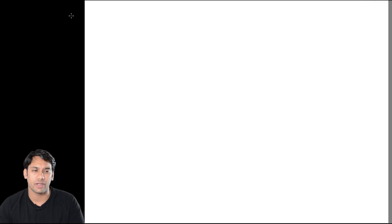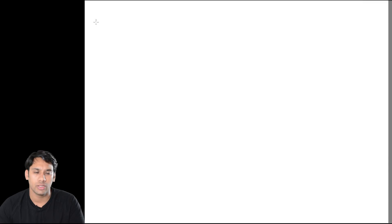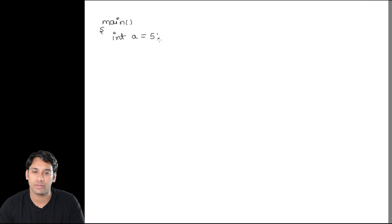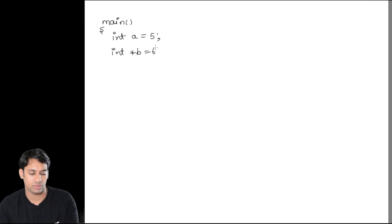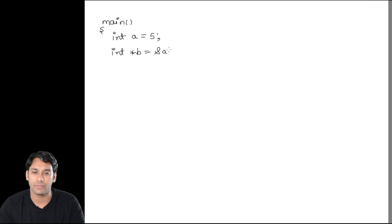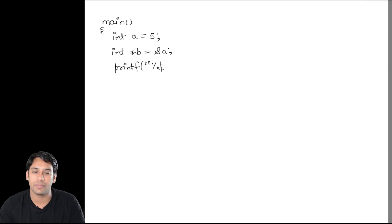In the last class we discussed about pointers and how to declare a pointer. Now let us move forward. If I write: main, int a = 5, then int *b = &a, and then printf with %p and b.